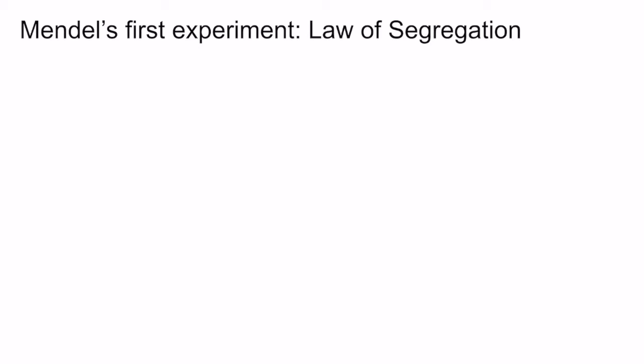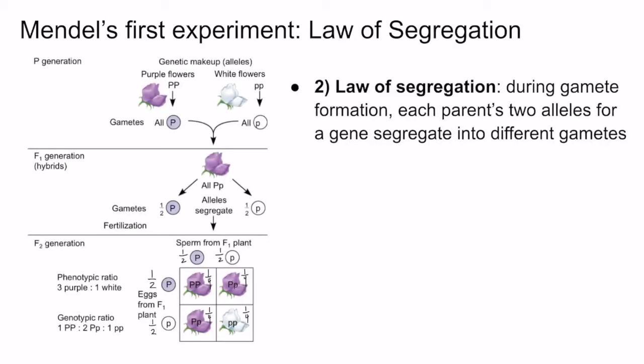Now I want to talk about the law of segregation. This was another law that Mendel deduced based on his first experiment. The law of segregation states that during gamete formation, each parent's two alleles for a particular gene segregate randomly into different gametes, such that each gamete receives only one of the two parental alleles. This means that each parent passes down to its offspring only one allele at random.